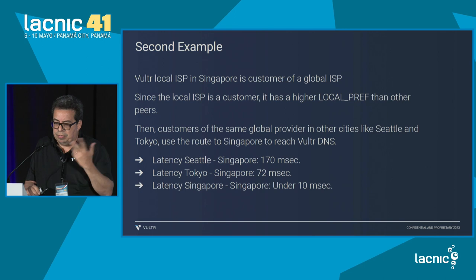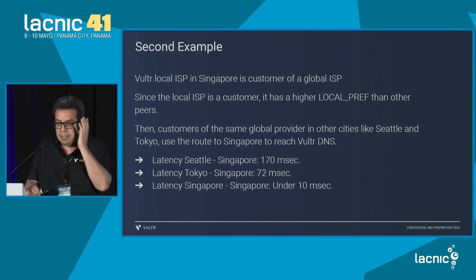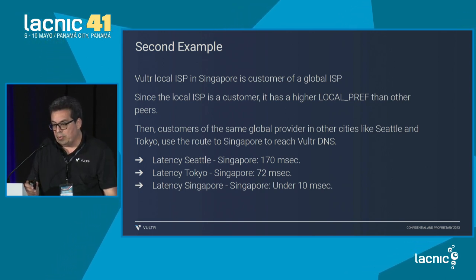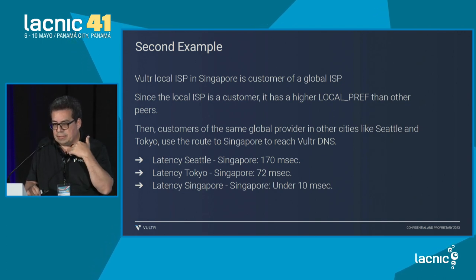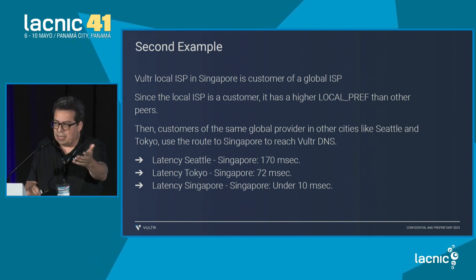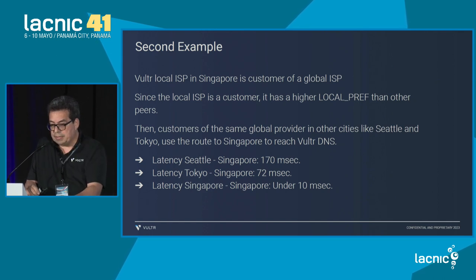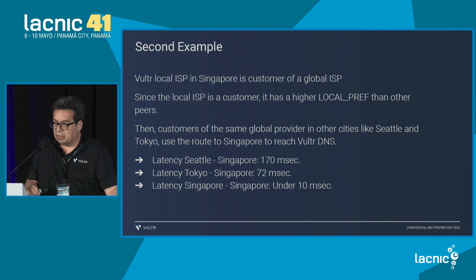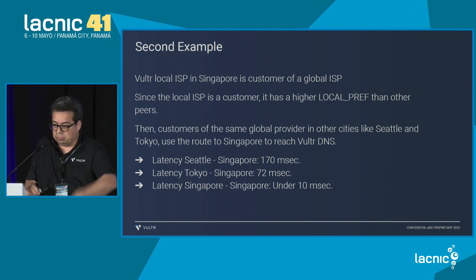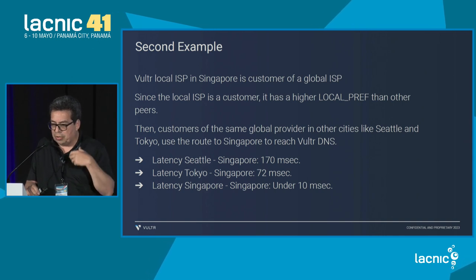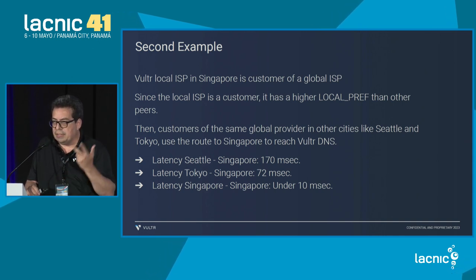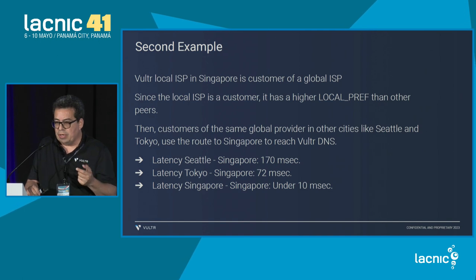Second example: a local ISP in Singapore, which at the same time is a customer for a so-called Tier 1 provider. Instead of choosing Singapore, they would choose Seattle as the best route. We tried to enhance it, and they ended up choosing Tokyo, but they would never choose Singapore as Singapore.